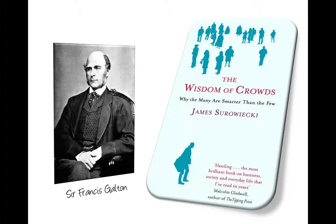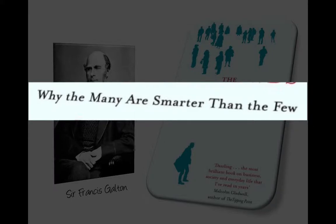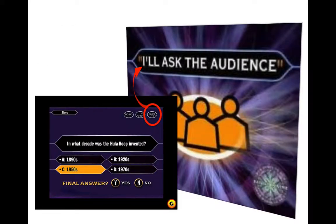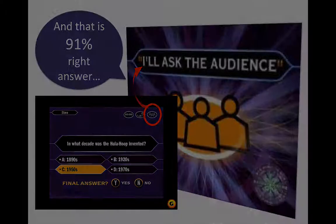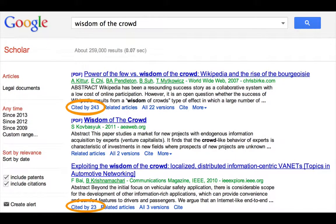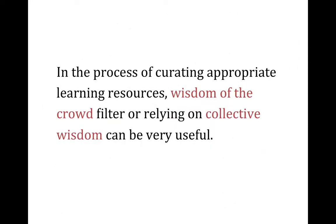The subtitle of Surovicki's book explains it all: why the many are smarter than the few. In certain situations, groups of people can be smarter than the smartest person in the group. Take the case of the TV show Who Wants to Be a Millionaire? — one lifeline allows participants to ask the audience, and according to Surovicki, 91% of the time the audience collectively arrives at the right answer. You can also think of the number of citations an academic article receives as a wisdom of the crowd filter, because more citations usually prove to be a good indicator of quality and relevance.